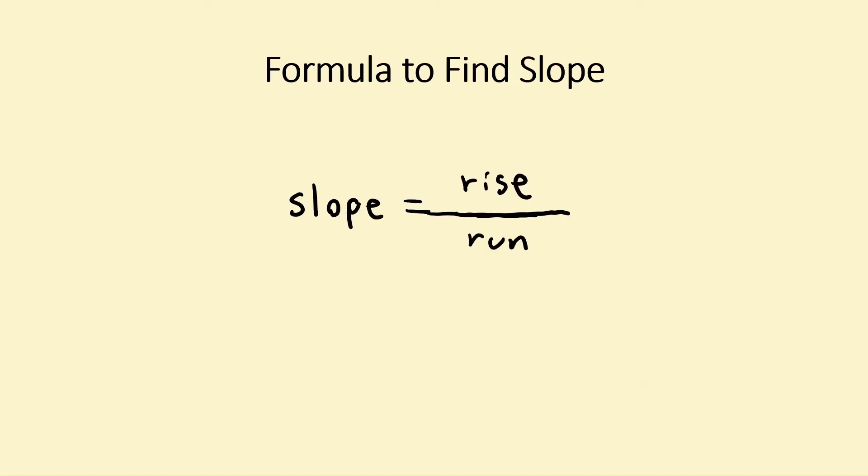Slope, which is known as rise over run, can be found by using the formula y2 minus y1 over x2 minus x1.